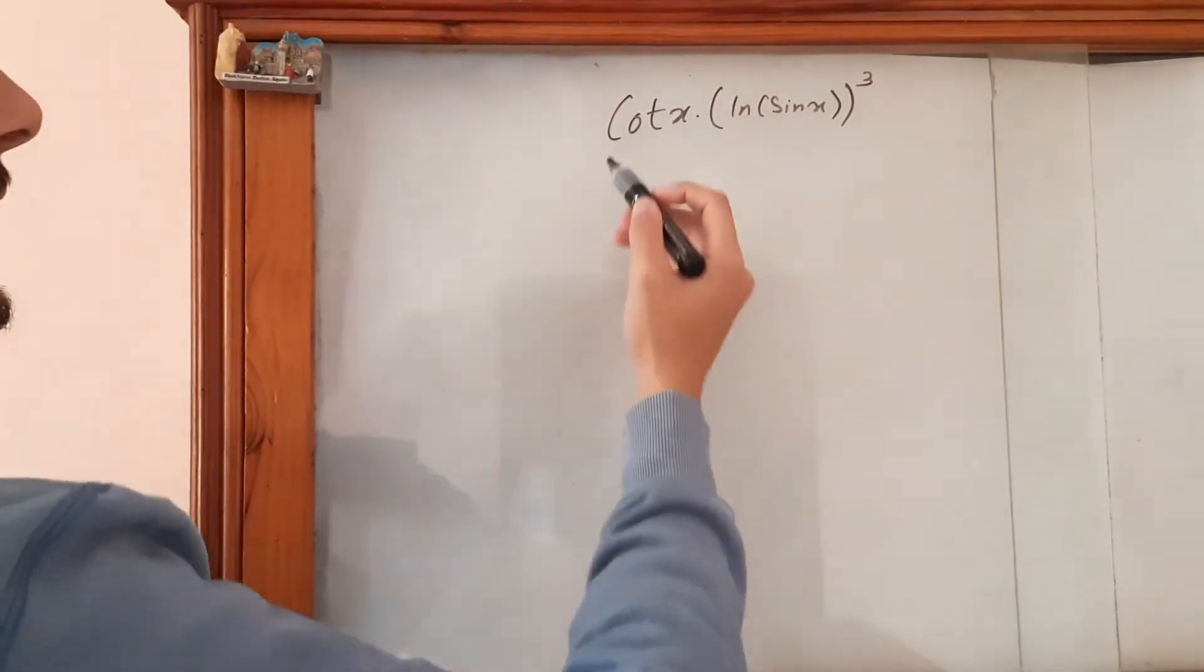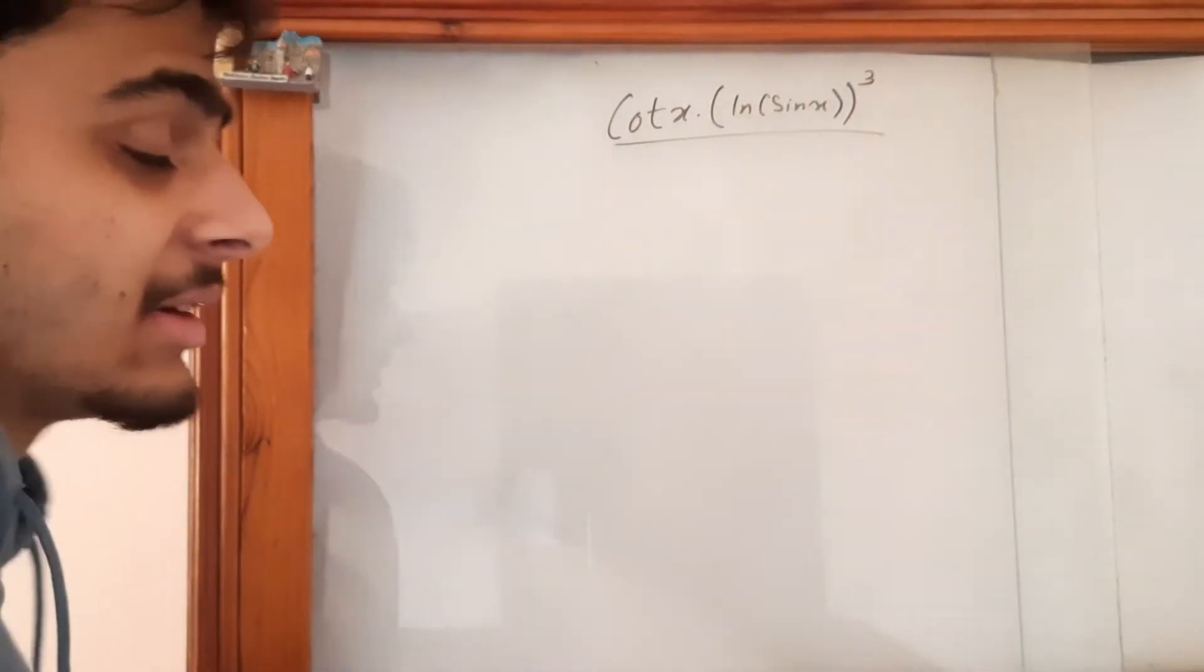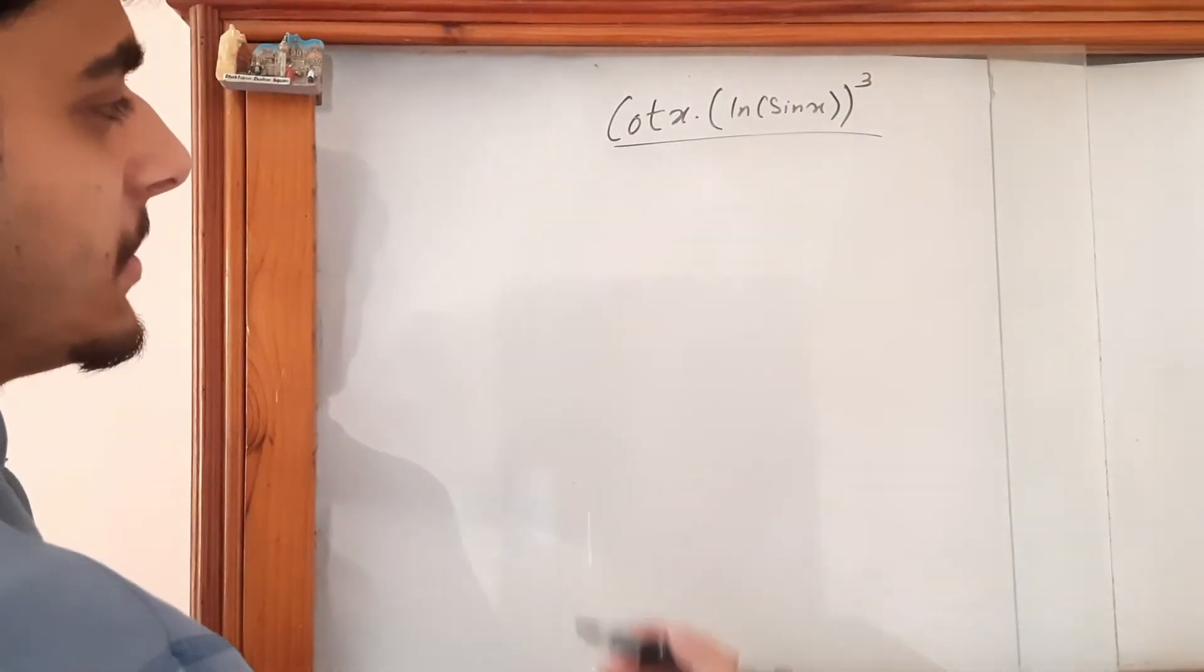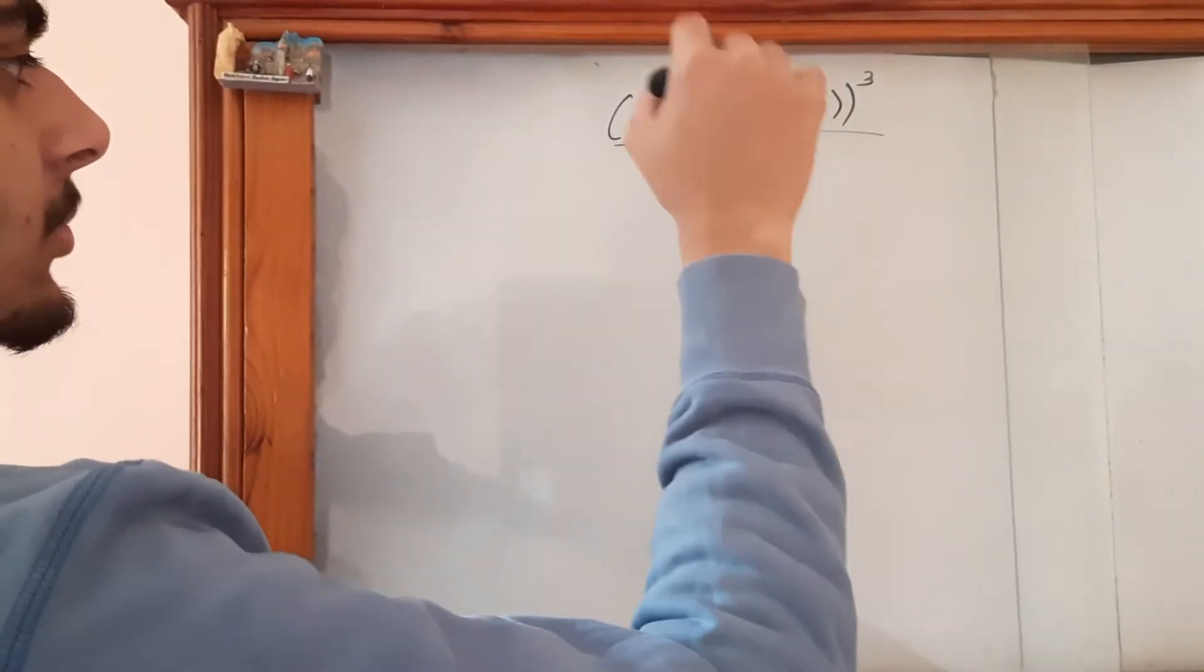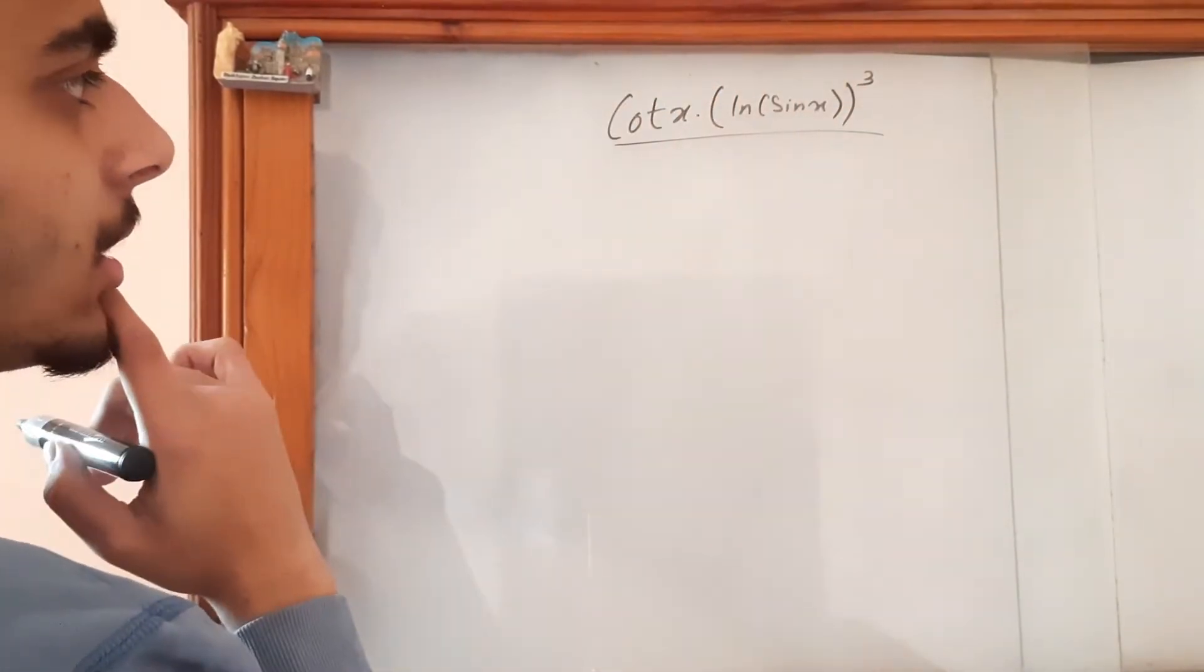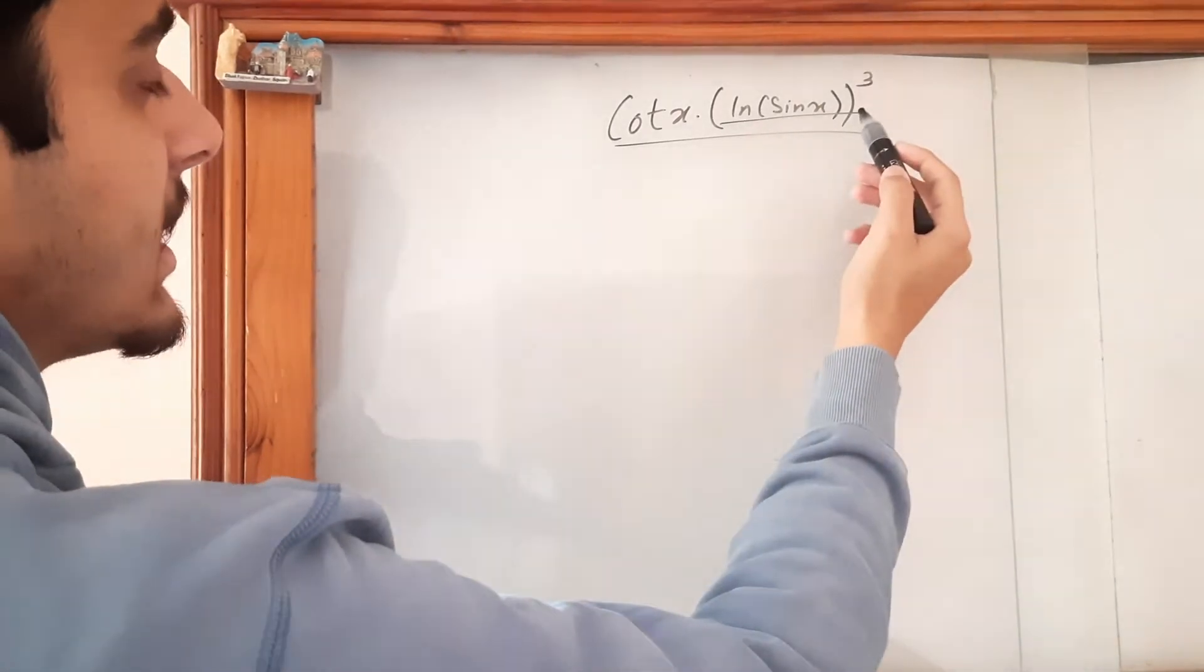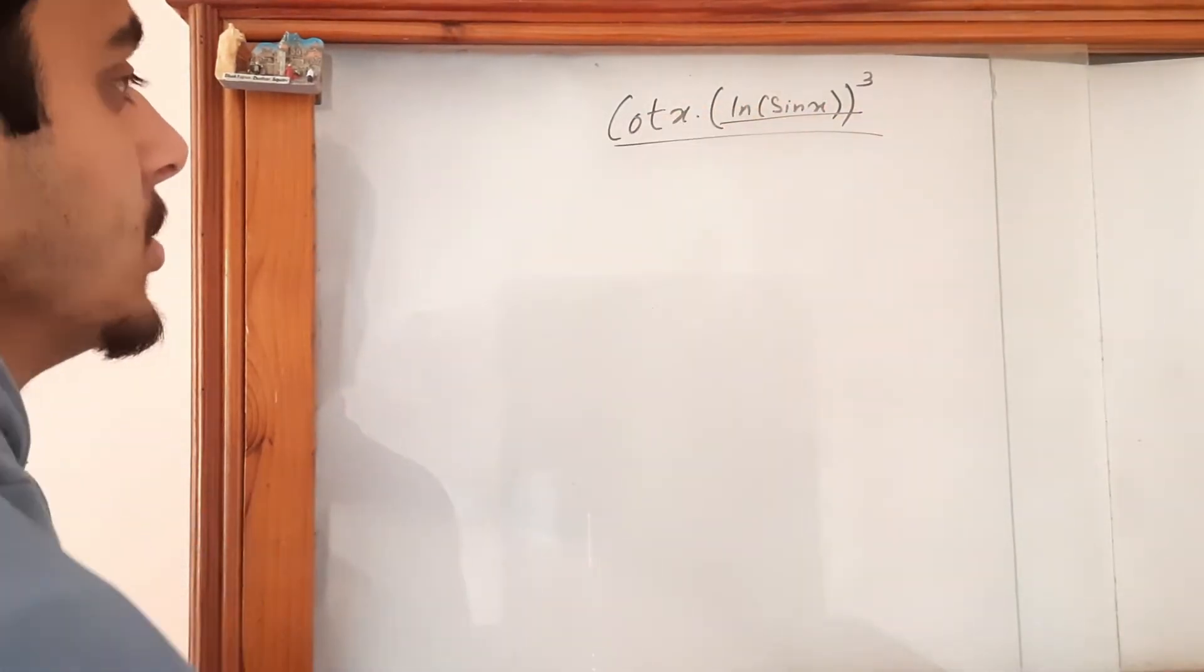You're probably thinking of applying the formula of integration by parts over here, which would not be wrong, but then it would be lengthier. So let's try and make the derivative of one term equal or somewhat equal to the other. I think this term's derivative could do the trick over here.